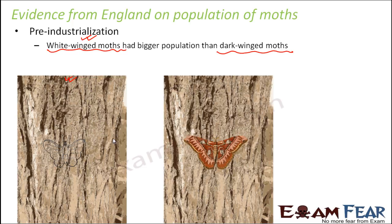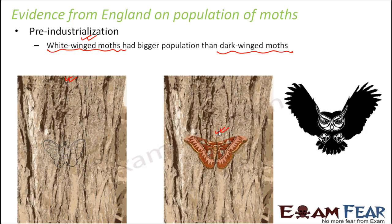Due to the presence of that white layer of lichen, the tree bark used to be lighter in color. When the bark was lighter, the white-colored moths were less visible on them. The dark moth, by contrast, was clearly visible against the almost-white background. These dark moths became easier for predators — for example, bats or owls — to spot and catch.